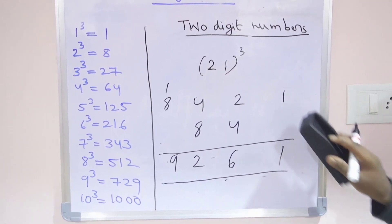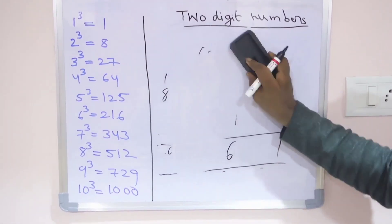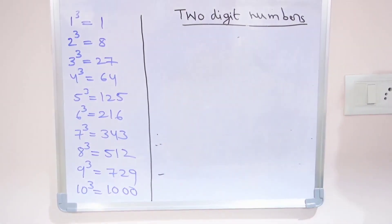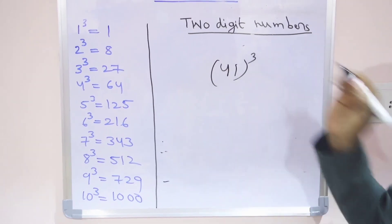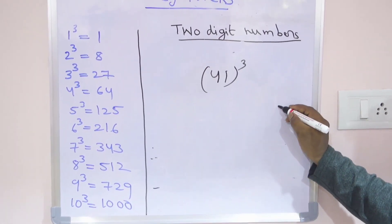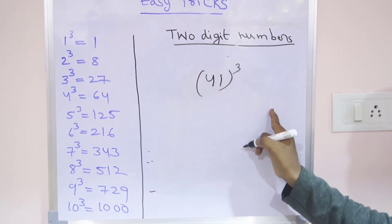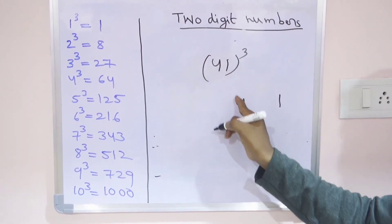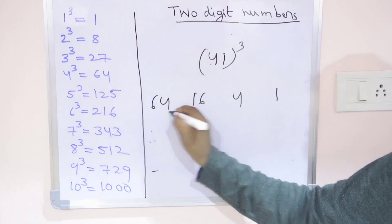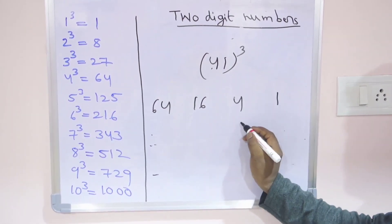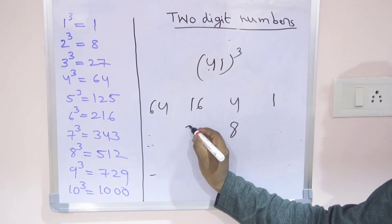41 whole cube. We will see 41 whole cube. Write 1, 4 times 1 is 4, 4 times 4 is 16, 4 times 16 is 64. Now middle numbers double: 8 and 32.